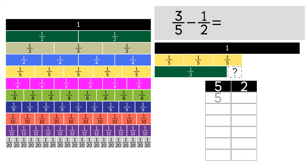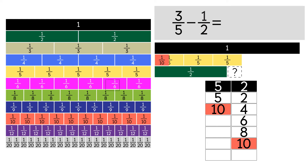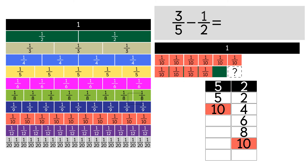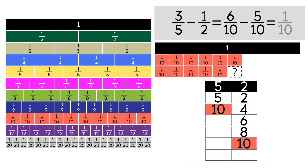First, let's list the multiples of 5: 5, 10, and so on. Now let's list the multiples of 2 until we find a common multiple with 5: 2, 4, 6, 8, 10. As you can see, 10 is the common multiple, so we're going to use fraction strips with 10 in the denominator. 2 strips of 1 tenth fit into 1 fifth, so 3 fifths is equal to 6 over 10. 5 strips of 1 tenth fit into 1 half, so 1 half is equal to 5 tenths. Now we can subtract. 6 tenths minus 5 tenths equals 1 tenth.